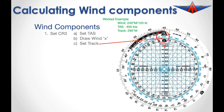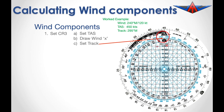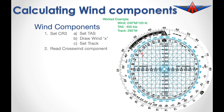The next thing we need to do is to set the track above the TC mark. The track is 295, so we are now going to spin the inner wheel around until 295 is directly above this TC mark. Now that the wheel is set correctly, we need to read the crosswind component. The crosswind component is calculated by dropping vertically from the X down onto the horizontal axis, and when we come down here it is just under 100 knots, so I read that as being 98 knots.